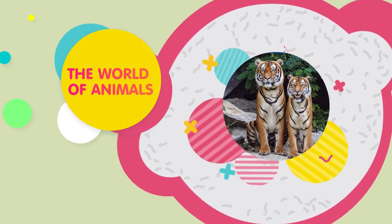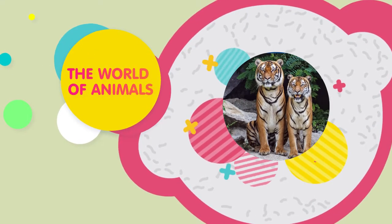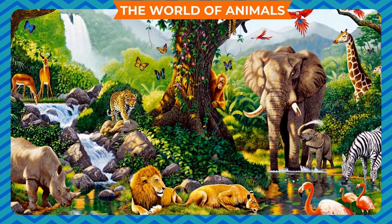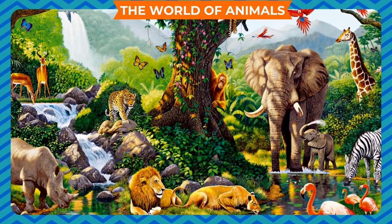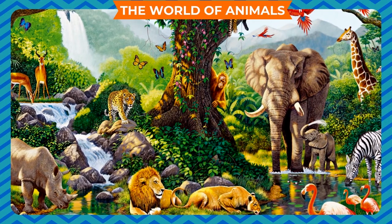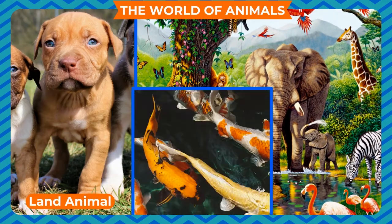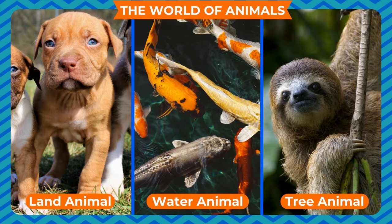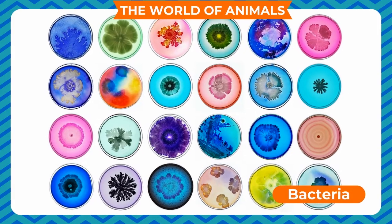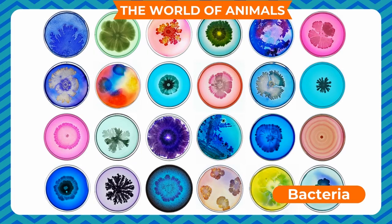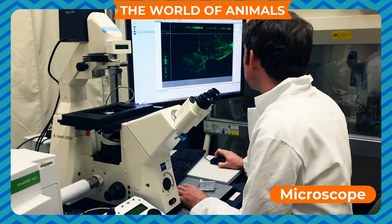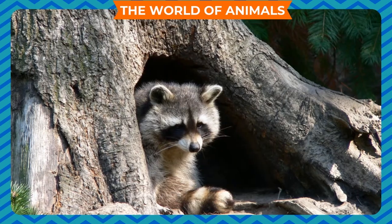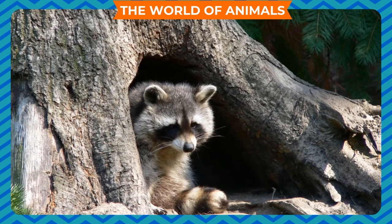The world of animals: different animals live in different natural surroundings, which are known as their habitat. Some animals live on land, some in water, and some on trees. Some microorganisms such as bacteria are so small that we cannot see them without a microscope, while some animals are huge, such as whales. Different animals have different habits and behavior.